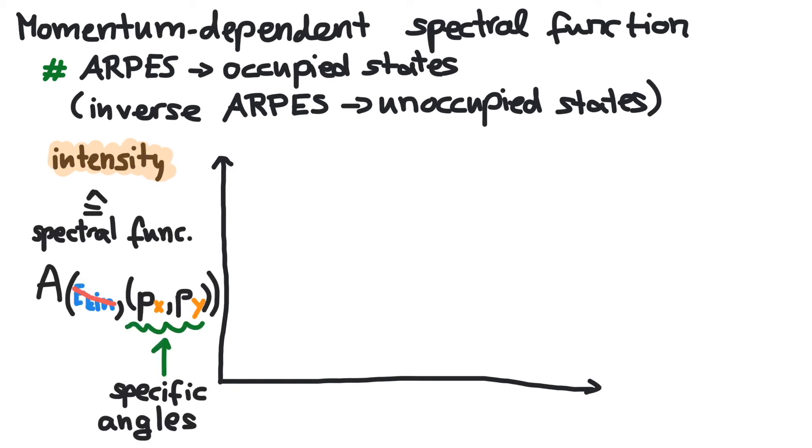In practice, the measured intensity at a specific angle is plotted as a function of the negative binding energy, rather than the kinetic energy. In a sense, the spectral function is the generalization of the density of states.